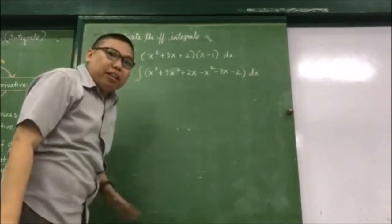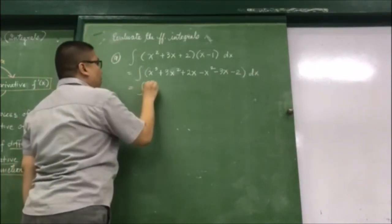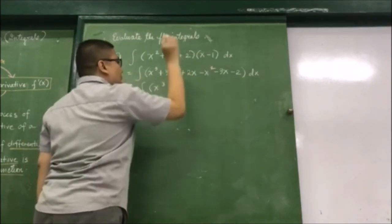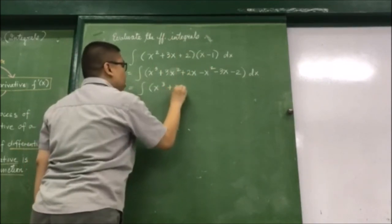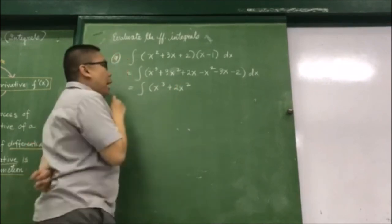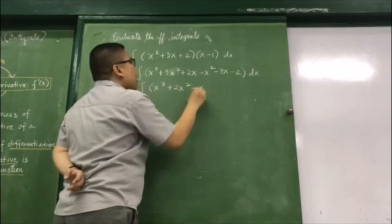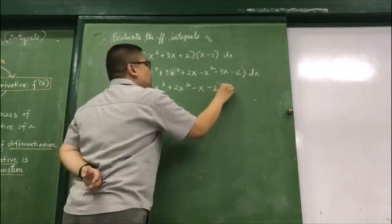Combine like terms if possible. So this becomes integral of x cubed, then 3x squared minus x squared is positive 2x squared, and then 2x minus 3x is negative x, and then minus 2 dx.